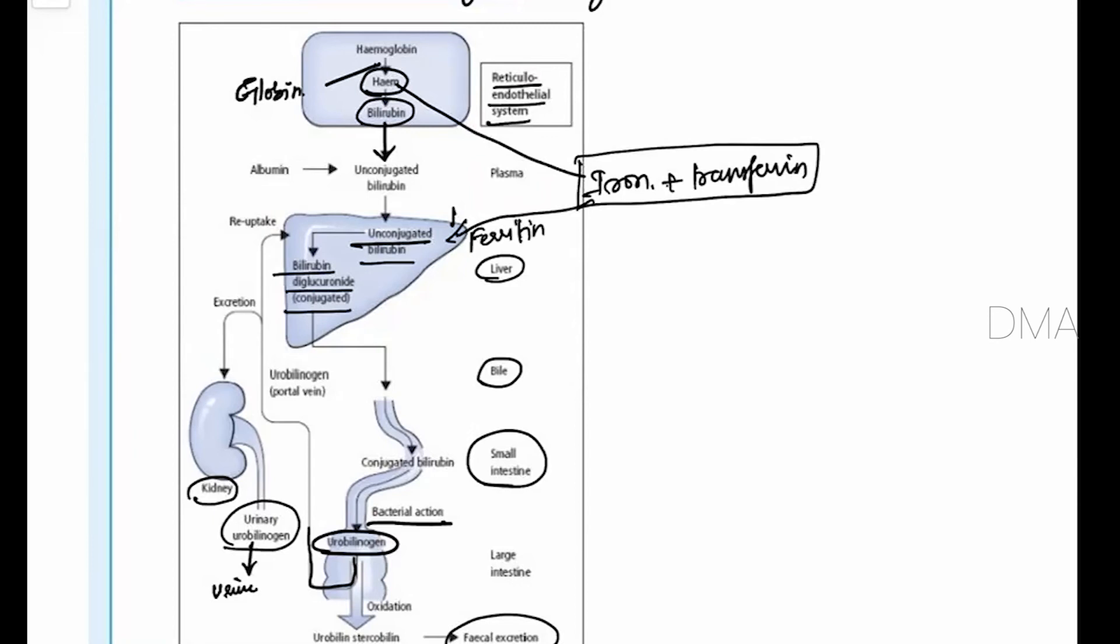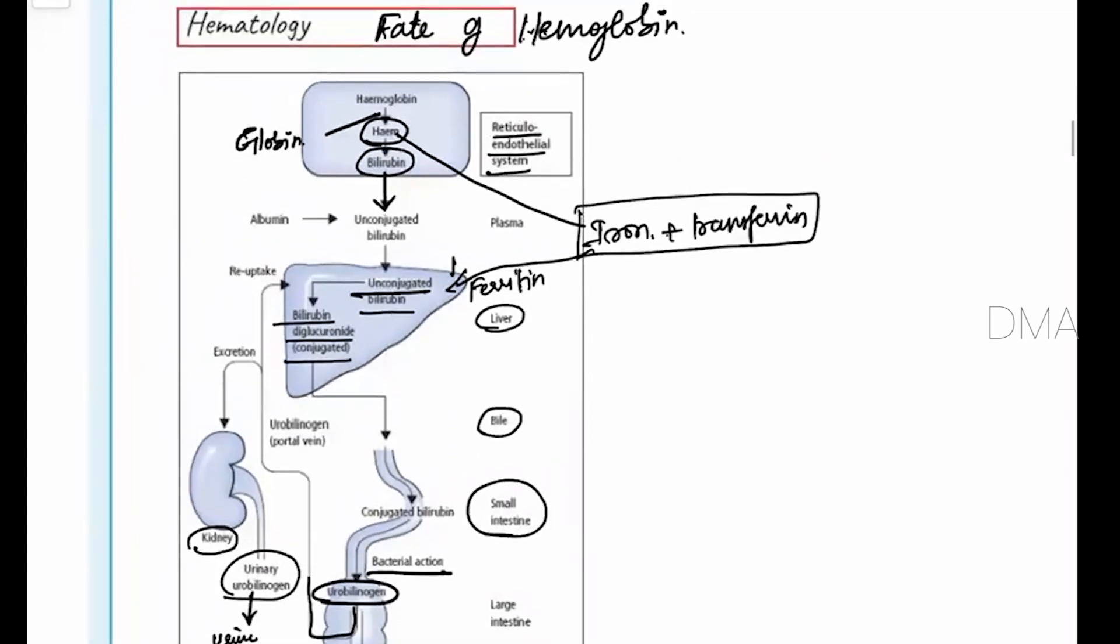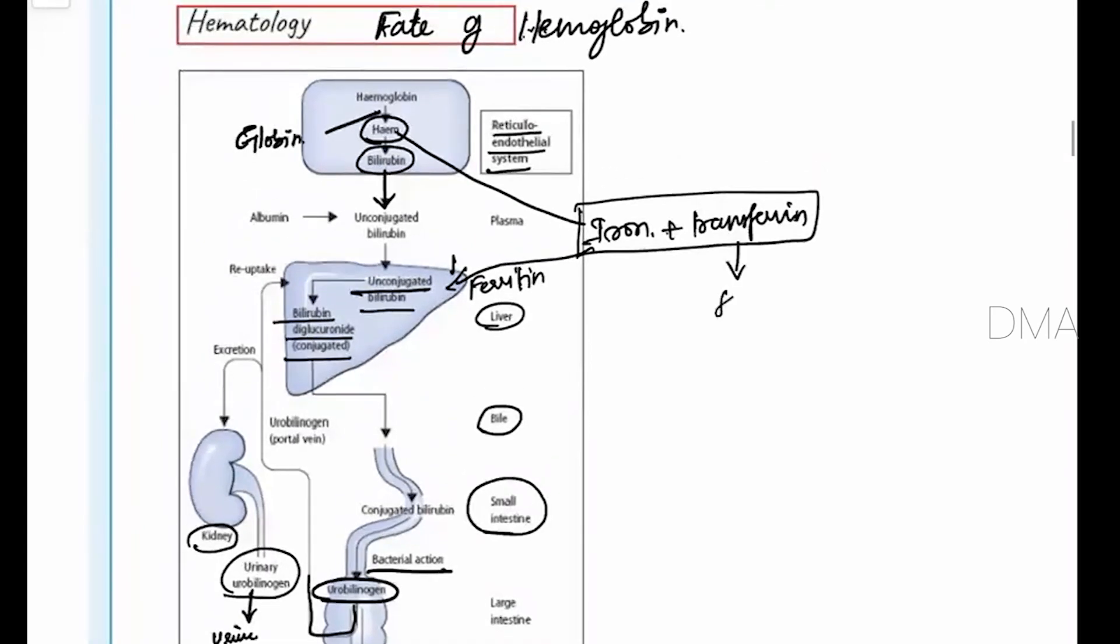So whenever there is a need for the erythropoiesis, this liver will release and then it will favor for the erythropoiesis. And also this has been stored in the spleen. So during the required period, the spleen and the liver will release the iron molecule and it has been utilized for erythropoiesis.